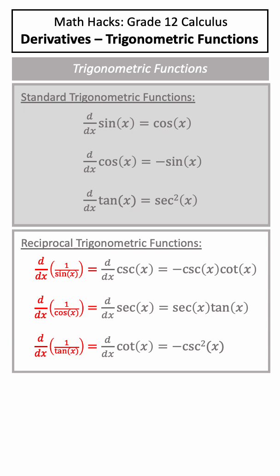The derivative of sine of x is cos of x, the derivative of cos of x is negative sine of x, and the derivative of tan of x is secant squared of x.